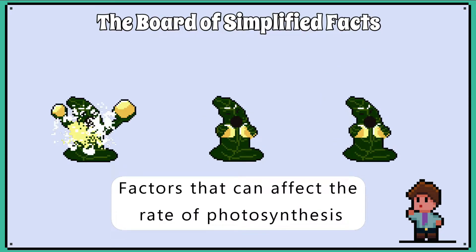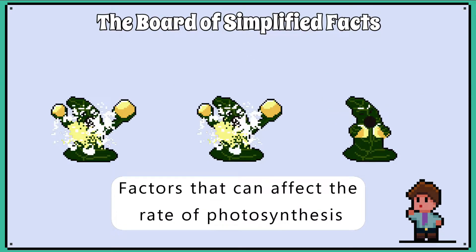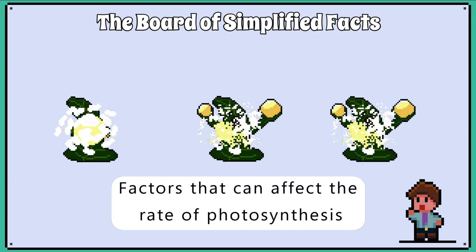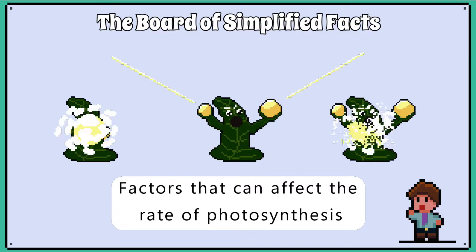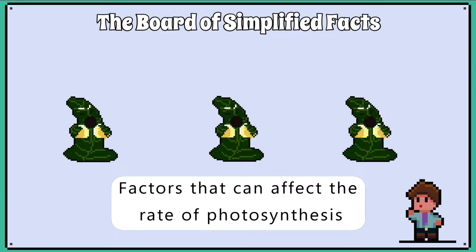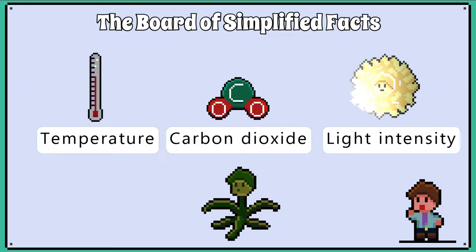Regarding the rate of photosynthesis, the following factors can affect how quickly a plant can photosynthesize. Temperature, carbon dioxide and light intensity can all affect how much a plant can photosynthesize.